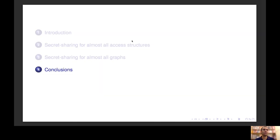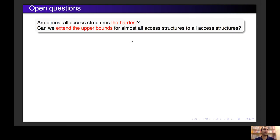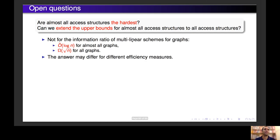Now we go to some conclusions and open problems. What we saw in this work is that for almost all access structures there exist secret sharing schemes that are more efficient than the known schemes for the worst case, and this is also the case for almost all graphs. One question is whether almost all access structures are the hardest, and whether we can extend the upper bounds for almost all access structures to all access structures. What we saw is that at least for the information ratio of multi-linear schemes, we cannot do it. But the answer may differ for different efficiency measures and families of access structures.